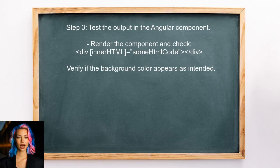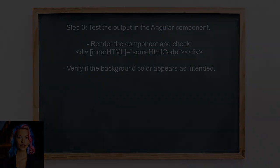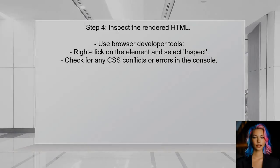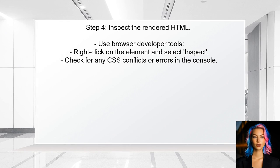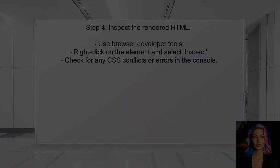After ensuring the styles are valid and bypassing security, the user should test the output in their Angular component. They can do this by rendering the component and checking if the styles are applied as expected. Lastly, if the styles still do not apply, the user should inspect the rendered HTML in the browser's developer tools. This can help identify any issues with the HTML structure or CSS conflicts.